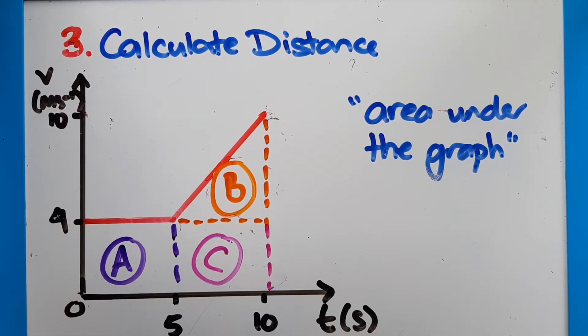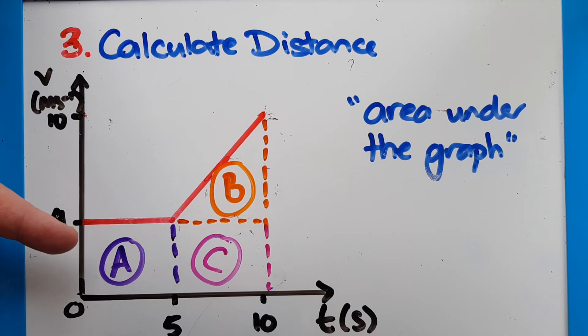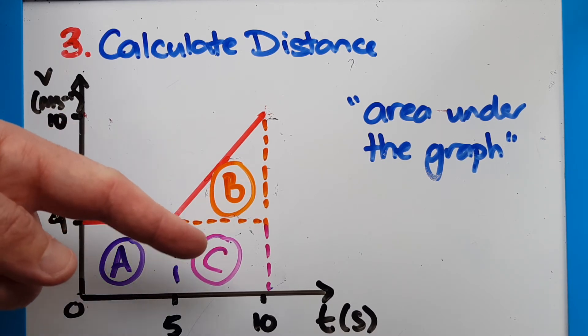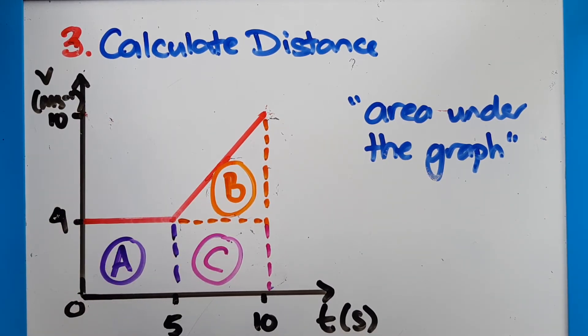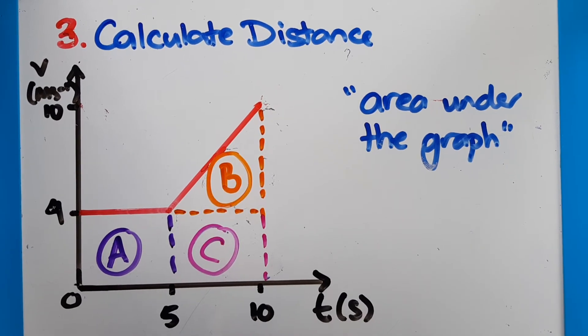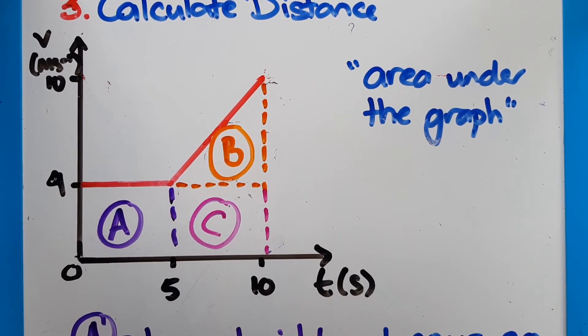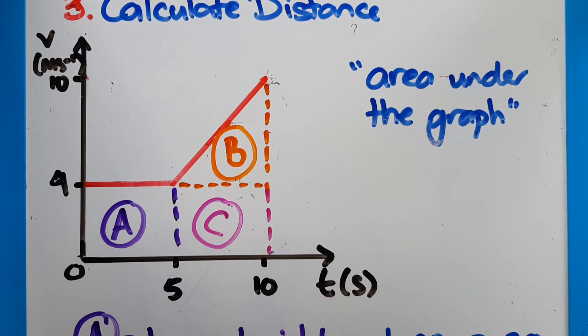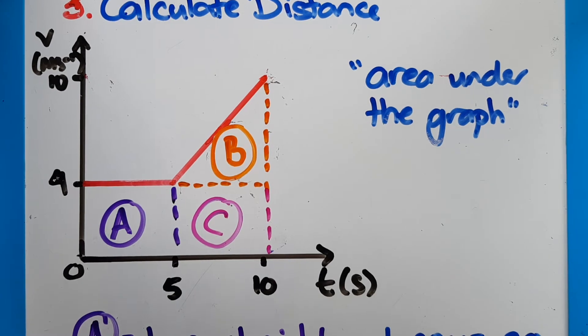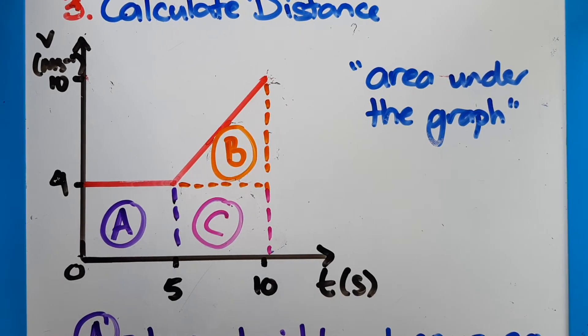The way we calculate the distance is we look at the area under the graph. So what we do is we break it up into polygons, so shapes. Here's a rectangle, here's a rectangle, and here's a triangle. And we use our geometry to work out the area within those basic shapes. So remember that a rectangle or square is base times height, and a triangle is half base times height.